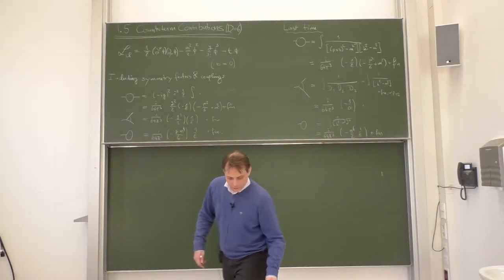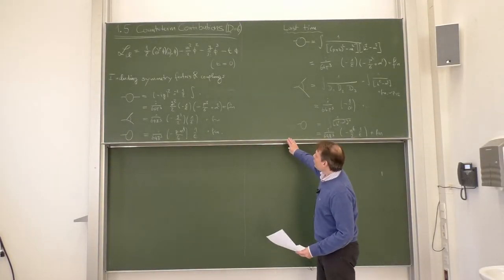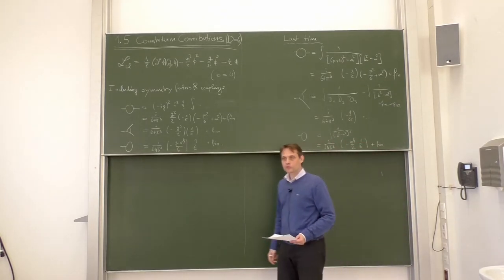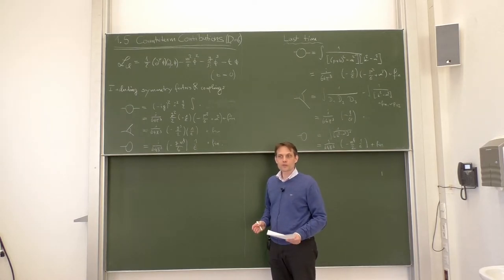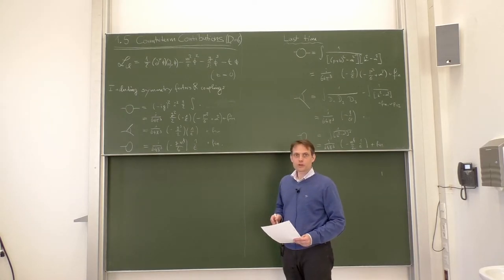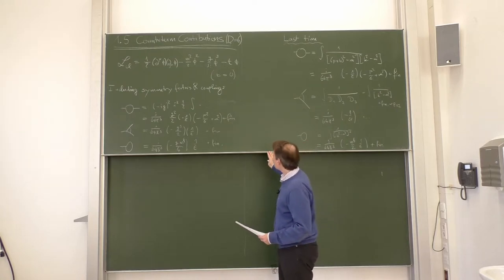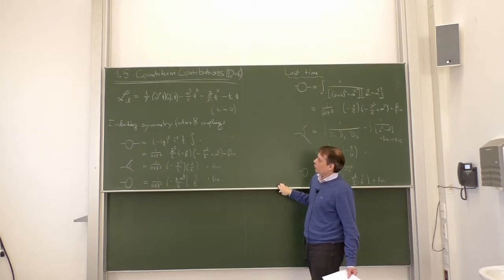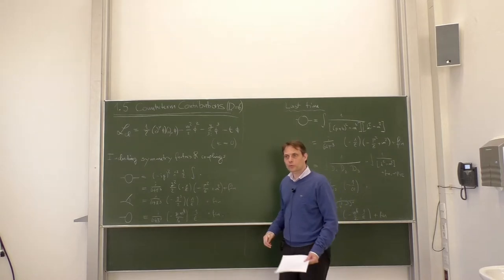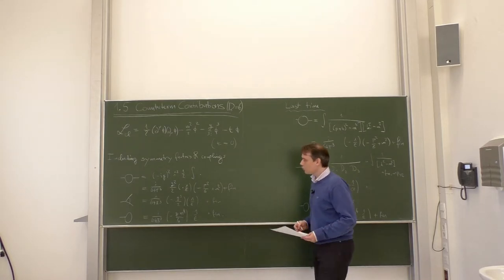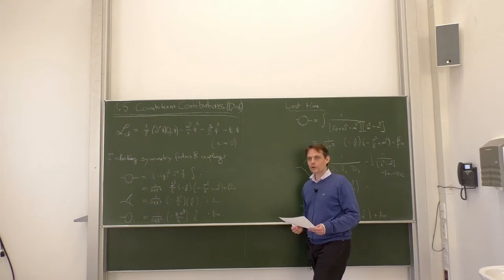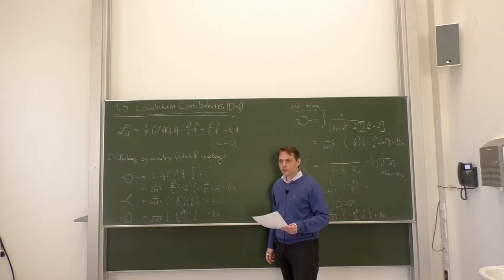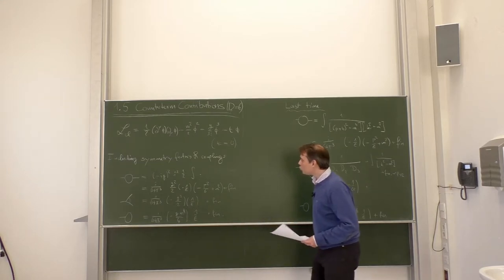Let us begin. We have today three topics in our overall first section of the lecture on introductory examples. I will give you three more directions of examples which we can refer to later. The first one is counterterm contributions. Counterterms are new Feynman rules which are there to cancel divergencies and to fulfill renormalization conditions. For us today, the counterterms have the purpose of canceling divergencies which arise from loop calculations.